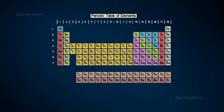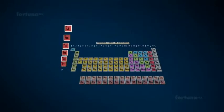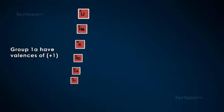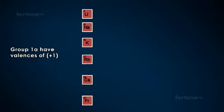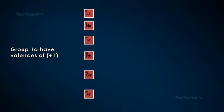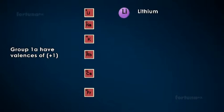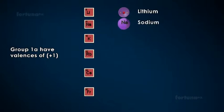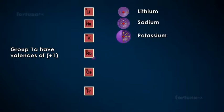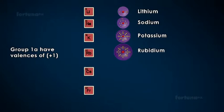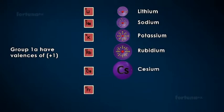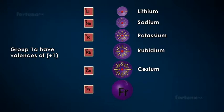The rules of valence: Atoms of group 1A have valences of plus 1. These elements are lithium, sodium, potassium, rubidium, cesium, and francium.